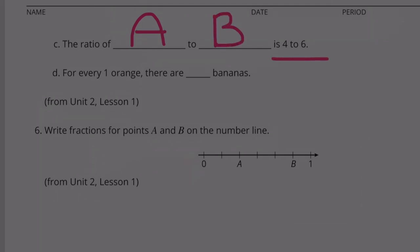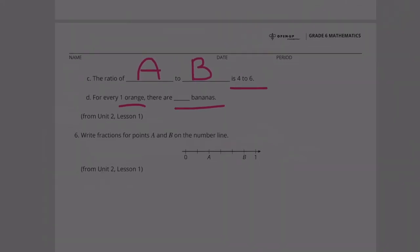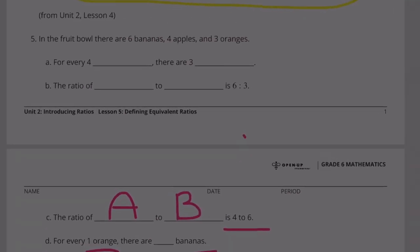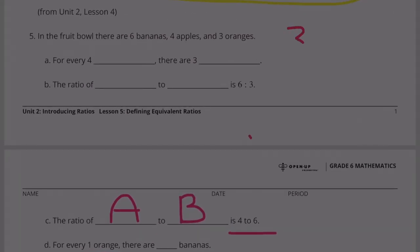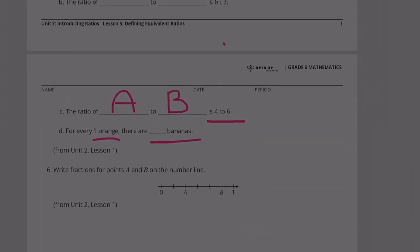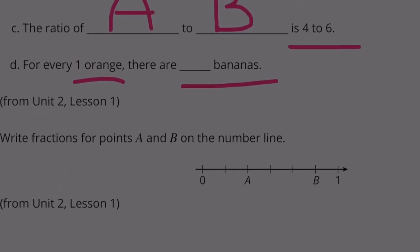For every 1 orange, there are blank bananas. Well, the ratio of oranges to bananas is 3 to 6. So there's twice as many bananas as there are oranges. So when there's 1 orange, there must be 2 bananas.